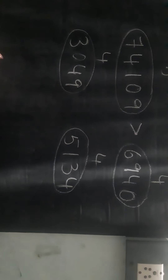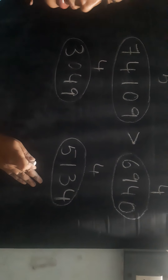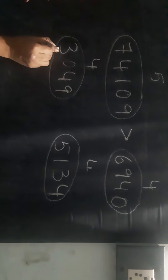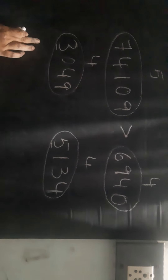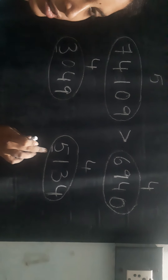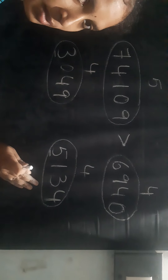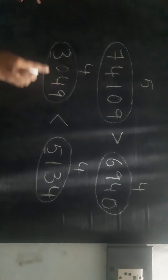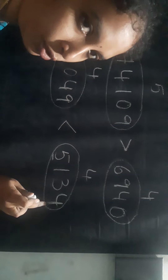If the number of digits are equal, then how are you going to compare these two numbers? Compare the first digits. What is the first digit here? 3. The first digit here is 5. Is 3 greater or is 5 greater? 5 is greater. So 5134 is the greater number. Therefore, 3049 is less than 5134.